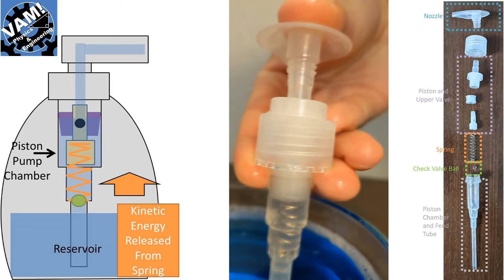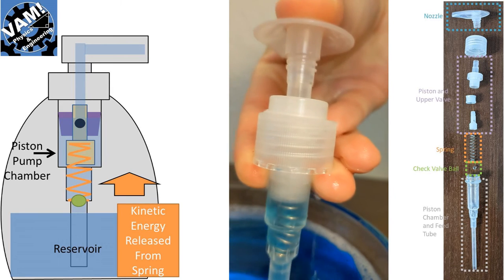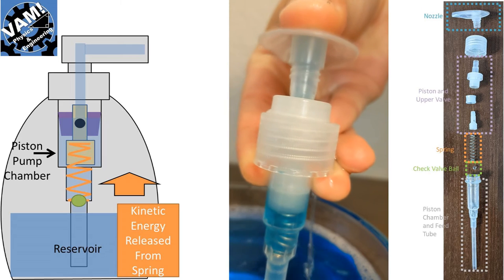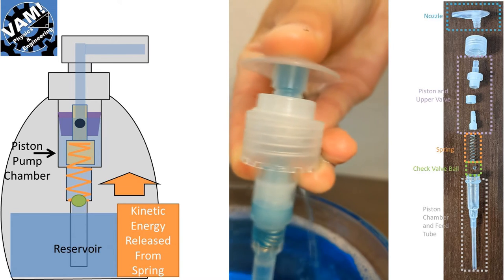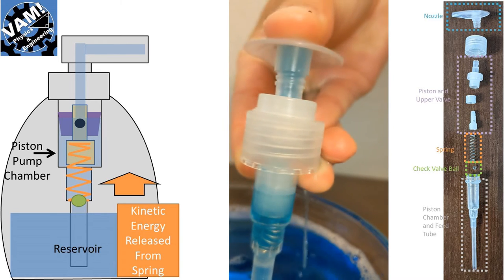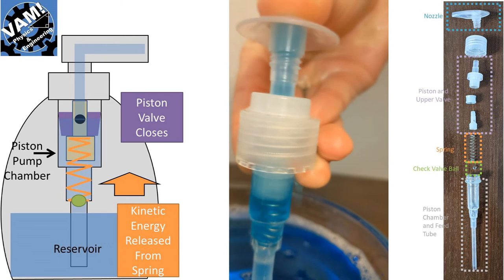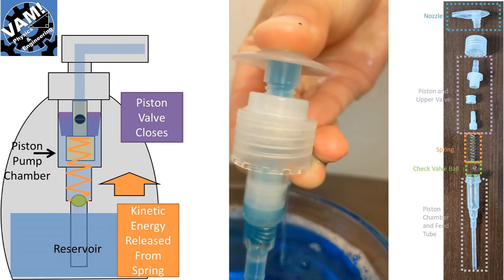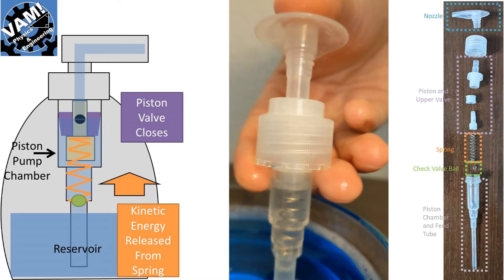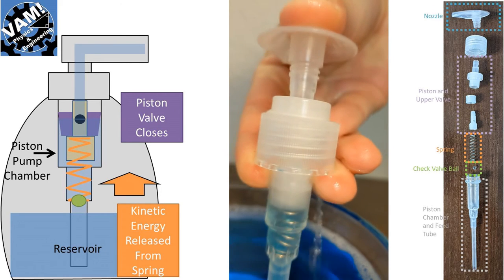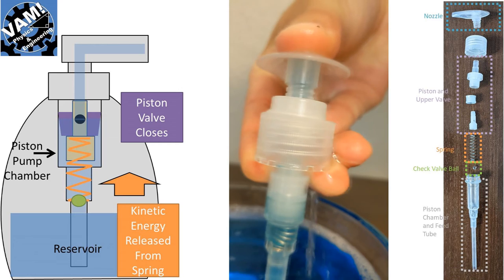So now when we stop applying the force to the pump nozzle the potential energy stored in the spring is released and turned into kinetic energy and the pump nozzle raises. This causes the purple piston upper valve to close due to the friction on the side of the piston chamber. No fluid can go through the top assembly at this stage.